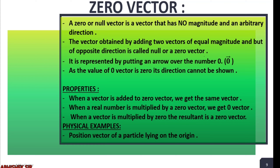These properties are similar to what you studied in lower standards for multiplication or addition by zero — the same rules apply here, but we add the word 'vector' after zero. A physical example of a zero vector is the position vector of a particle lying at the origin, where the coordinates are (0, 0). Another example is the displacement vector of any stationary object — that will again be a zero vector.